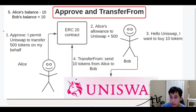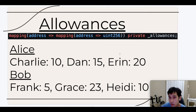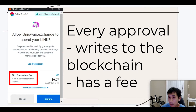Instead, Alice can give permission to Uniswap and then Uniswap can take care of handling the payment and the transferring on Alice's behalf. ERC-20 contracts keep track of the allowances through a mapping of mappings. For example, Alice has given Charlie permission to transfer 10 of her tokens, she's given Dan permission to transfer 15 of her tokens, and she's given Aaron permission to transfer 20 tokens. Every time you call the approve method to give permission to someone to transfer tokens on your behalf, the ERC-20 smart contract has to update its allowances variable to keep track of how much that person is allowed to spend.